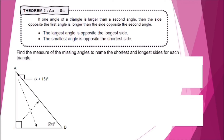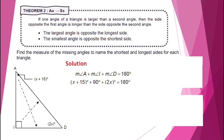Let's find the measure of the missing angles to name the shortest and longest sides for each triangle. Based on our figure, we need to add the degree measure of angle A plus the degree measure of angle I plus the degree measure of angle D, which is equal to 180 degrees, because the interior angles of a triangle sum to 180 degrees. Substituting, we have (X + 15) + 90 + 2X = 180 degrees.